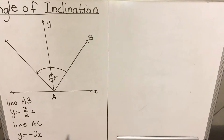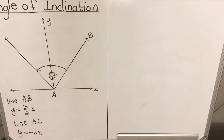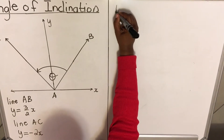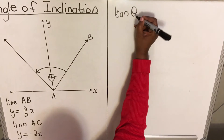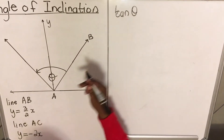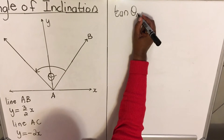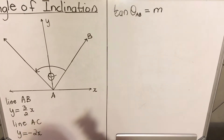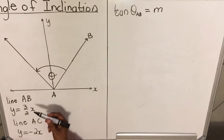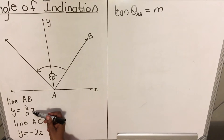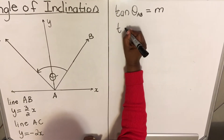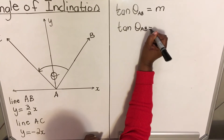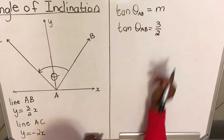We're going to use the formula: tan(theta) equals the gradient. Because we have two lines, we have to specify each one. So we say: tan(theta) for AB equals the gradient of AB. The gradient is the number that goes with x. So tan(theta) for AB equals 3 over 2.